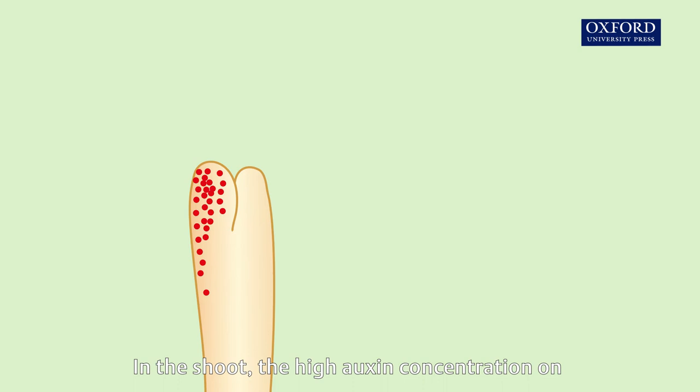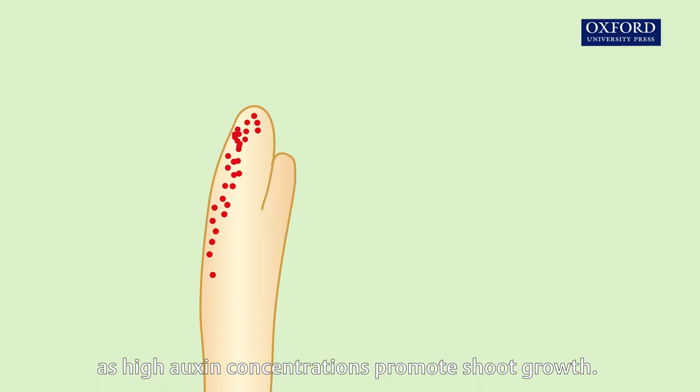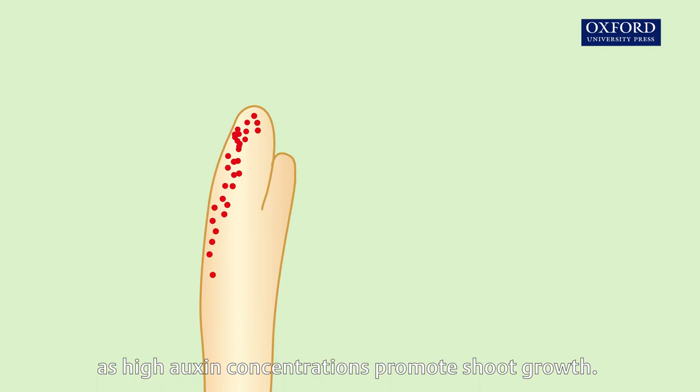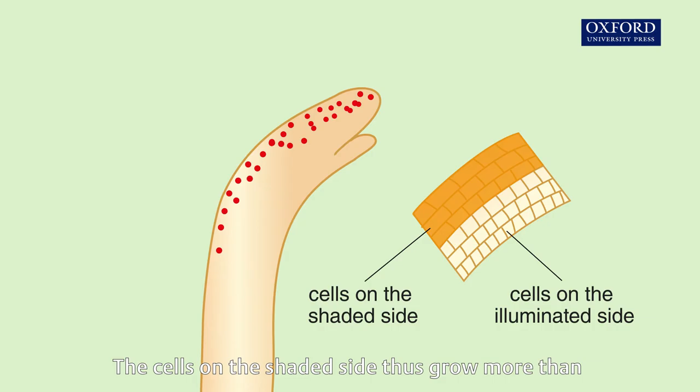In the shoot, the high auxin concentration on the shaded side promotes growth there, as high auxin concentrations promote shoot growth. The cells on the shaded side thus grow more than those on the illuminated side. Therefore, the shoot bends towards the light.